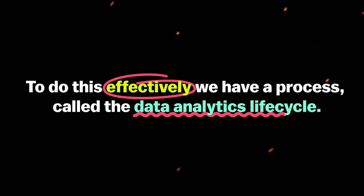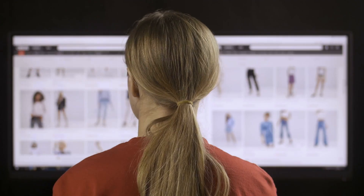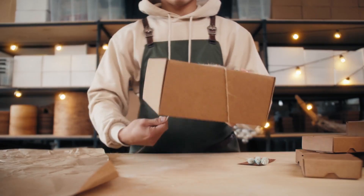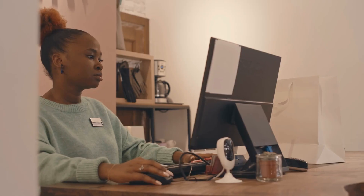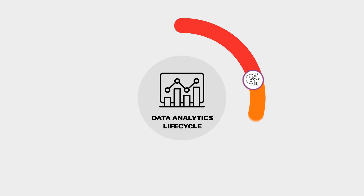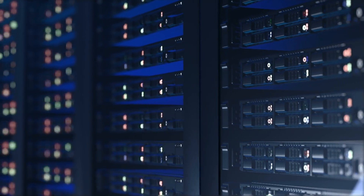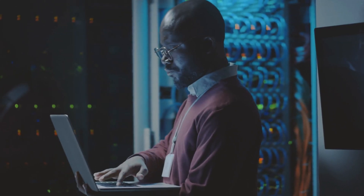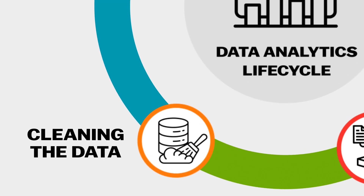To do this effectively, we have a process called the data analytics lifecycle. You start by asking a question or figuring out the problem you want to solve. For example, we may want to figure out what products are selling the best and what products are selling the least, and any other important information we can use to improve our store. Once you understand these objectives and the requirements, you can move on to collecting the necessary data. It can be available in a database, a simple spreadsheet, or anywhere else, and you may have to even collect it yourself. Next, we have to clean the data. We need proper, clean data to be able to draw good conclusions, so it's very important.